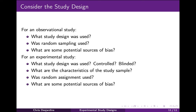When reading the medical or public health literature, pay careful attention to the description of the study design. It should provide enough information to answer key questions. For an observational study: what study design was used, was random sampling used and how was it implemented, and what are some potential sources of bias? For an experimental study: what study design was used, was the study controlled, was it blinded, what are the characteristics of the study sample, was random assignment used and how was it implemented, and what are some potential sources of bias?